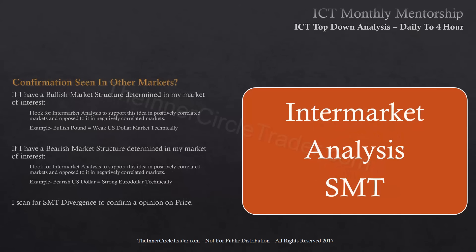Then I look for SMT divergence, using intermarket analysis as explained in the previous two lessons. I'm specifically looking for SMT divergence to confirm an opinion I have on price. If I'm bullish on the cable, I want to see either a higher low when the dollar makes a higher high, or a failed higher high in the dollar when cable has made a lower low — that could be a liquidity run for sell stops and then a turtle soup long. I look for SMT divergence from the daily down into the four-hour, because that's where its effectiveness is greatest.